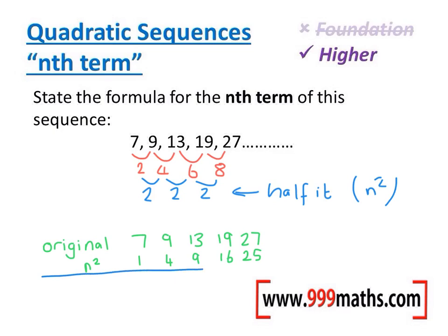The next step is just to do top line take away the second line. I'm just going to make a little note here that we're going to now subtract. So 7 take away 1 is 6, 9 take away 4 is 5, 13 take 9 is 4 and so on. And whatever we're left with, after we've done that subtraction, we then just need to do normal nth term on that.